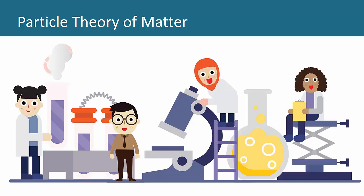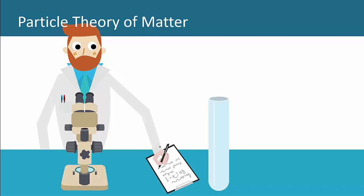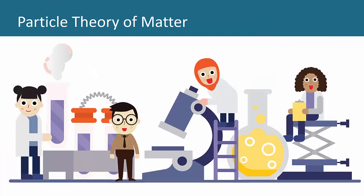Scientists have spent hundreds of years investigating matter. They developed a theory to help them explain its qualities. A theory is an explanation of something that has been supported by repeated experimental results. The particle theory of matter says that matter is made of small particles called atoms, which are constantly moving.